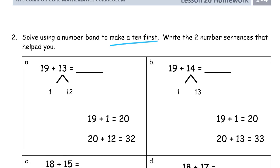So, 19 plus 13, I'm seeing this 9, and I know it needs one more to make the next 10, which would be a 20. So, there's the 1, and then that's the rest of the 13 is 12. And I add the 1 first, so I'm adding to it 20, 32.